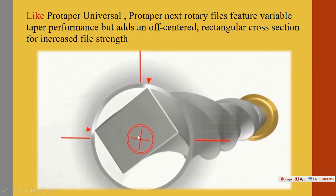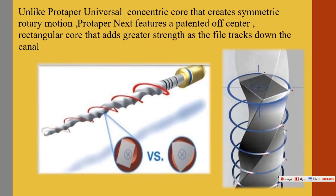Reducing dentine contact is the most important and notable feature when comparing ProTaper Next with the previous system. The rectangular core provides greater strength as the file tracks inside the canal, reduces stress on the dentine, and provides space for debris removal.